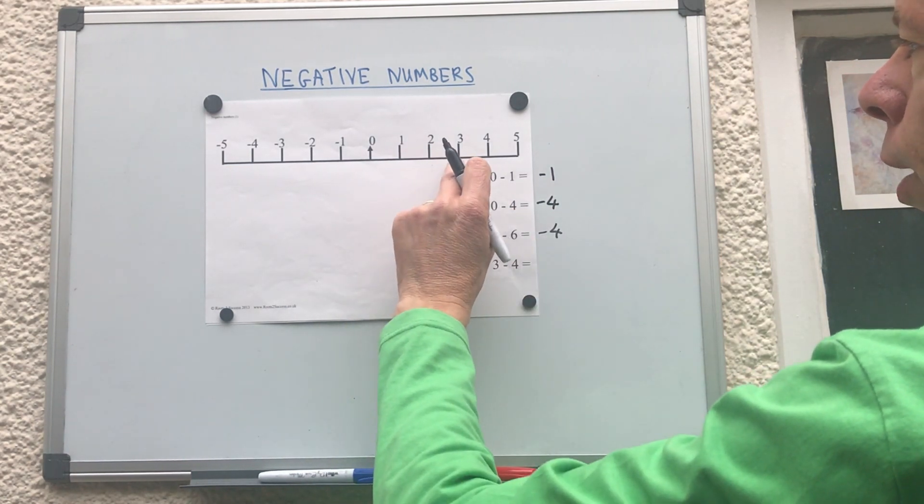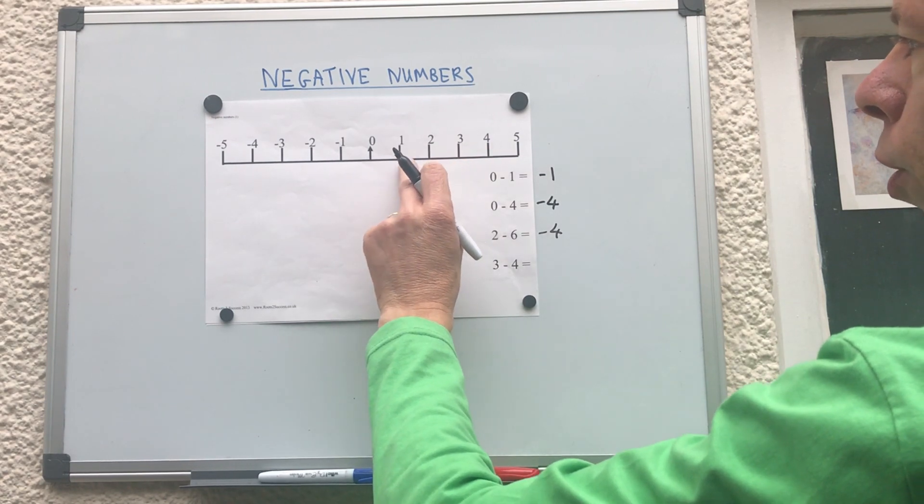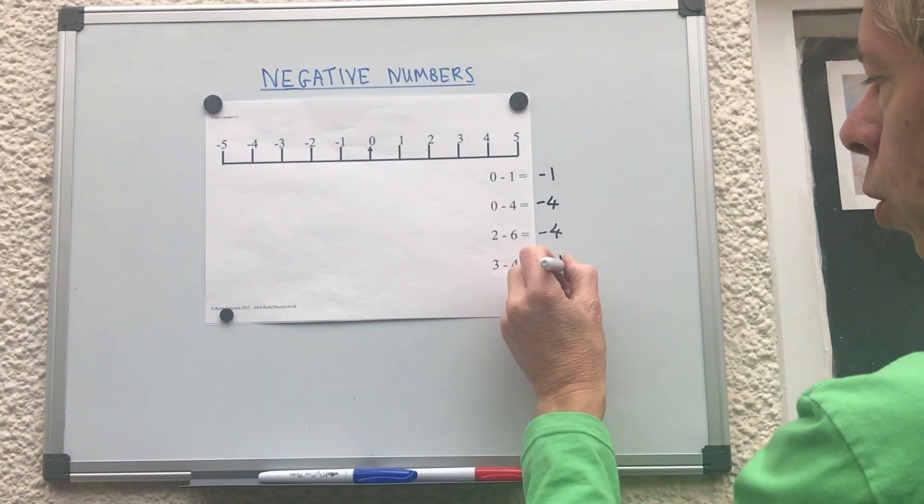Three take away four, so start at three, minus one, two, three, four, so that will give us minus one.